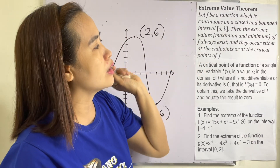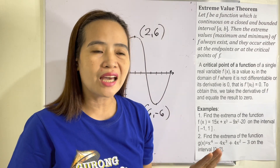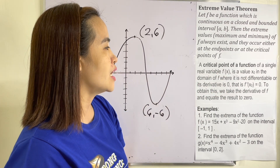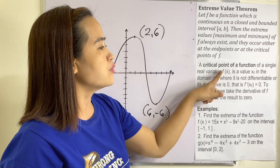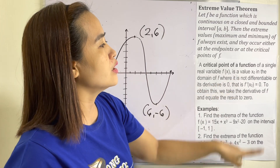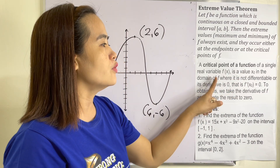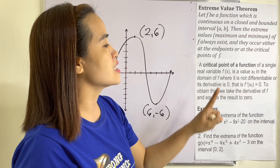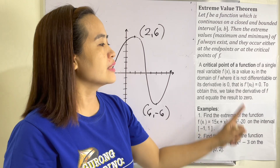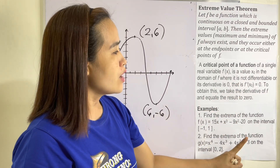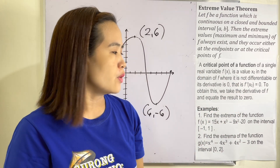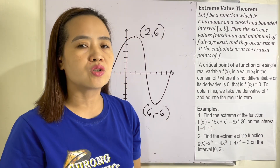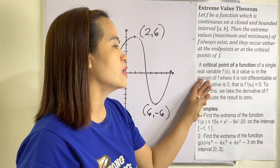When we say extreme values, we are referring to the maximum point and the minimum point. A critical point of a function of a single real variable F(x) is a value x₀ in the domain of F where it is not differentiable, or its derivative is 0 — that is, F'(x₀) = 0. To obtain this, we take the derivative of F and equate the result to 0.